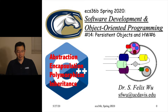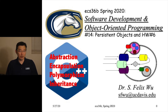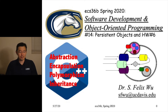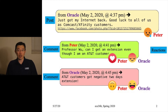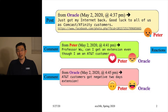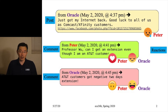In this lecture I'm going to talk about a concept called persistent object, and this will naturally lead into homework assignment number six. We have what we call a post, which allows a group of people to exchange information, show their reactions, and share what they feel about a certain topic.